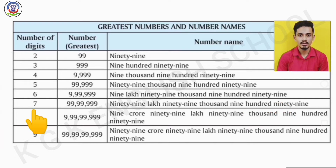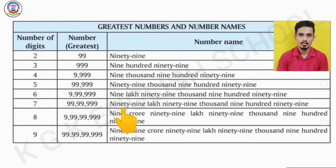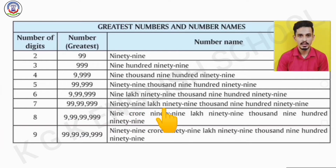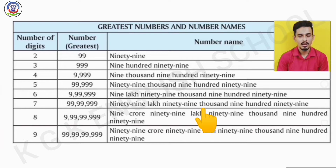In 7-digit numbers, the greatest number is seven 9's and its number name is 99,99,999.